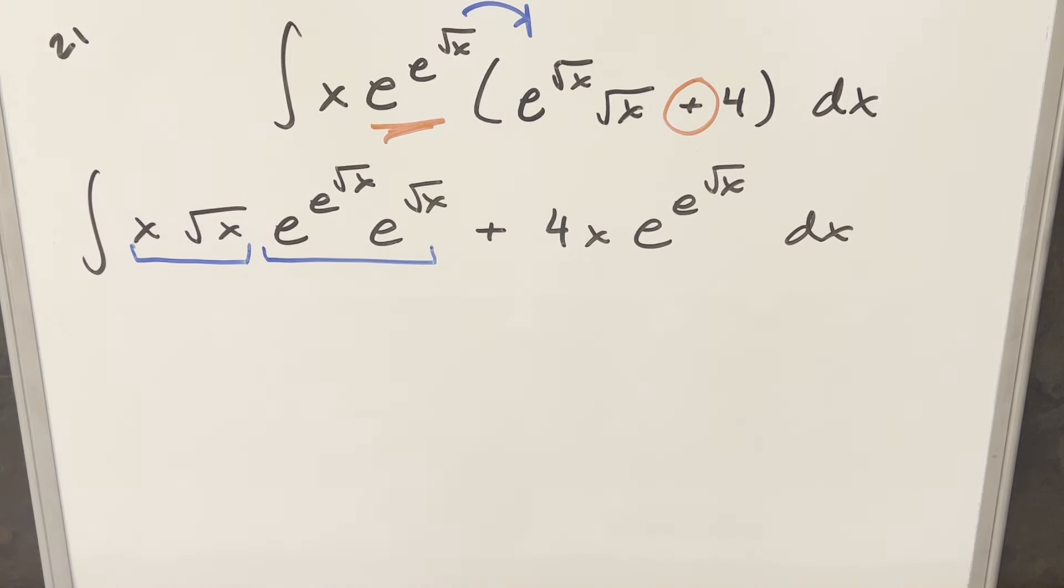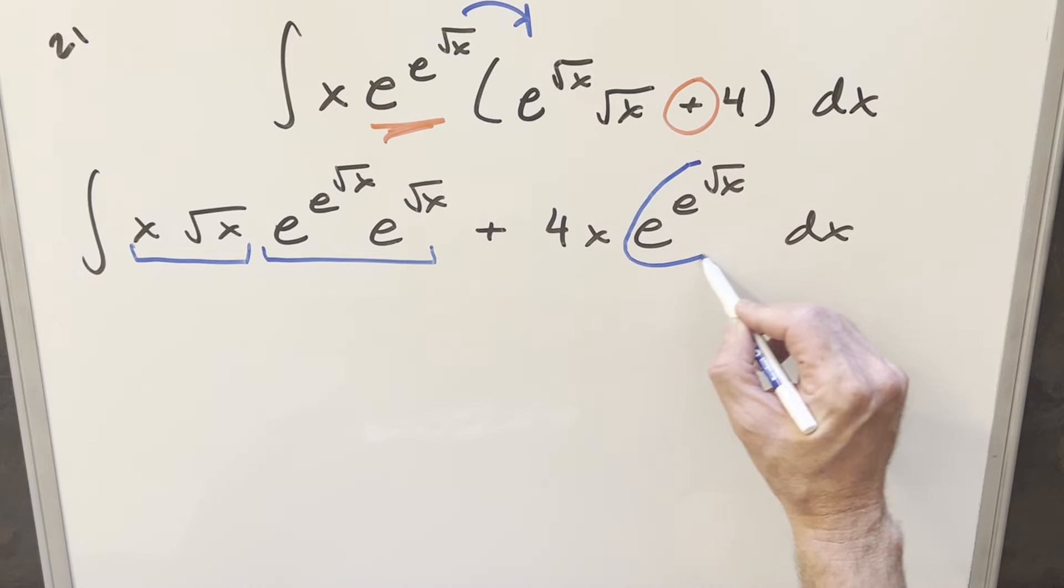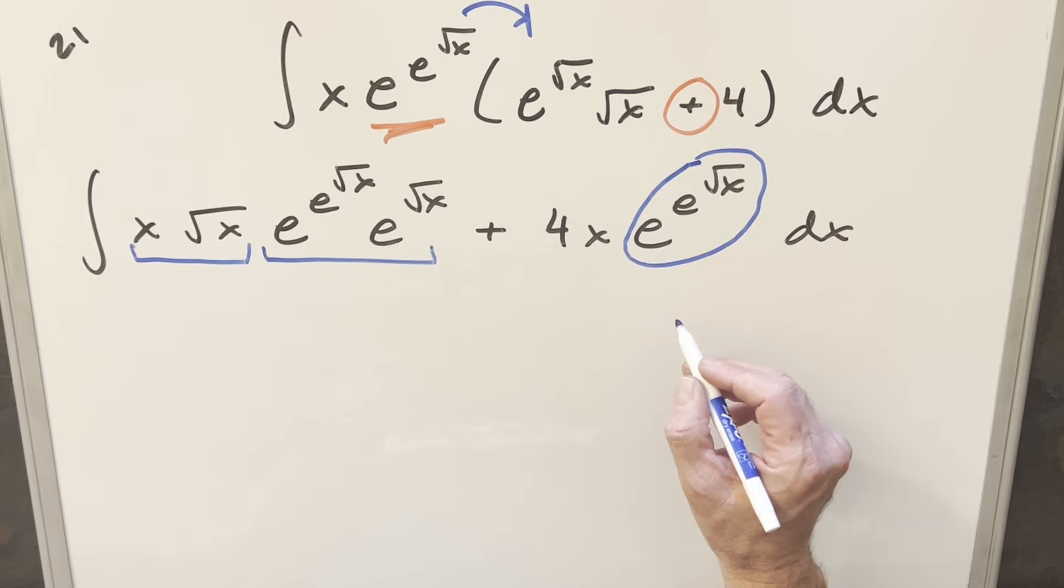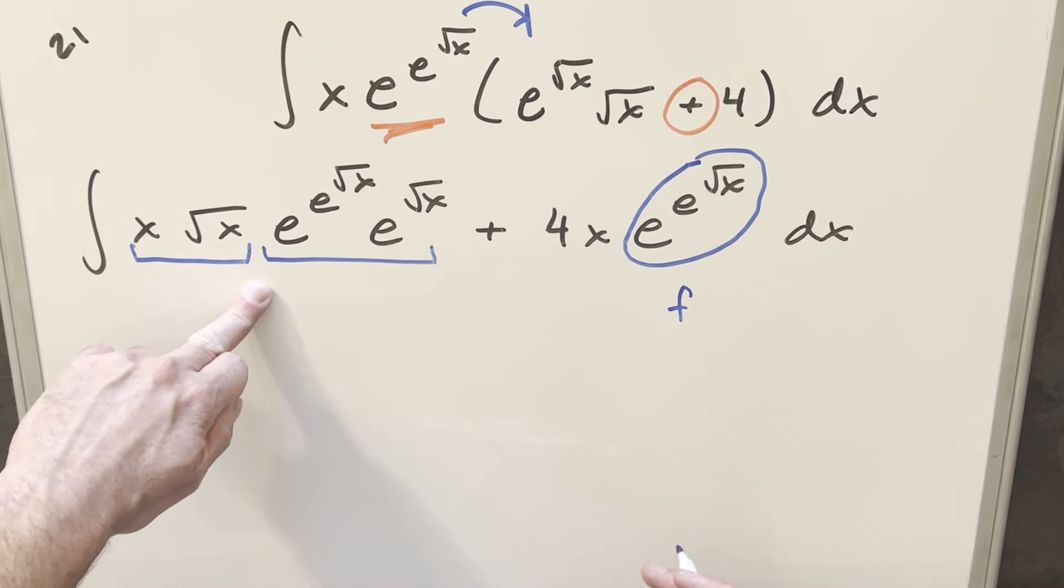I think what's going on here and what's going to be the derivative of this—it looks like maybe the derivative of this could be this or something like this. So what I'm going to do is put a label. Let's call this our f, and then what I want to do is take the derivative and see if we can find the derivative over here.